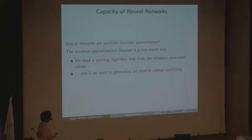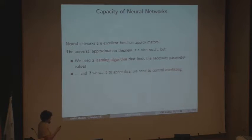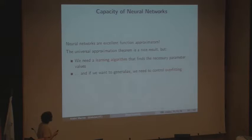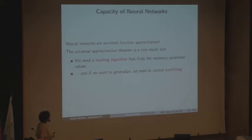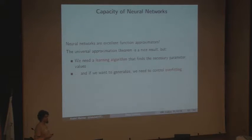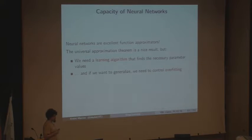As a summary: neural networks are excellent function approximators, and most of their success comes from this fact. The universal approximation theorem is a very nice result, but it's not constructive — it just states that approximation is possible, not how to do it. We still need a learning algorithm that finds the right parameters, and we need to generalize to unseen data, which means controlling overfitting.